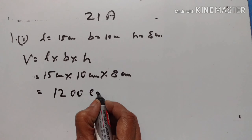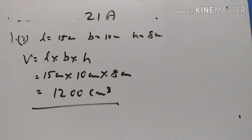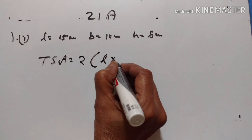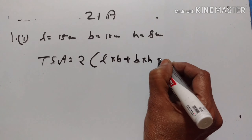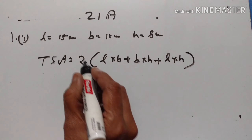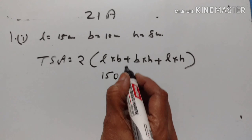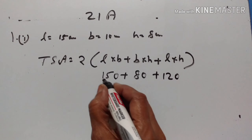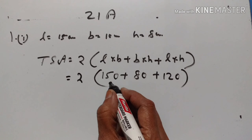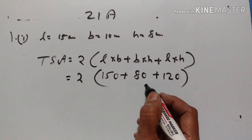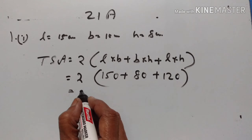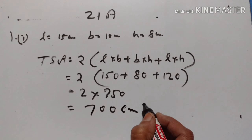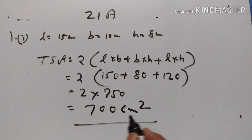Therefore the volume is 1200 cm³. Now let us find the surface area. Total surface area = 2(lb + bh + lh). l×b = 150, b×h = 80, l×h = 15×8 = 120. So TSA = 2(150 + 80 + 120) = 2 × 350 = 700 cm².